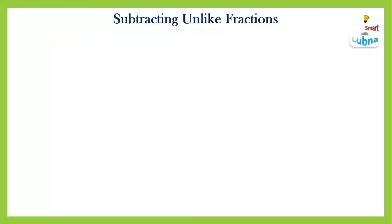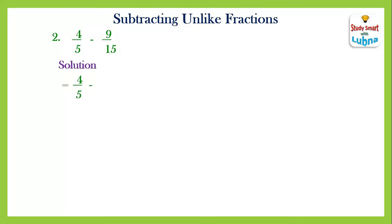Another example: four upon five minus nine upon fifteen. These two are again unlike fractions because their denominators are different. Let's start the solution. We put the equals sign, then copy both fractions as they are with the minus sign. The next step is to find the LCM of the denominators five and fifteen.